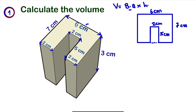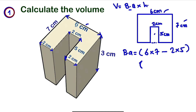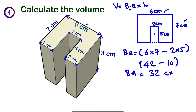The formula for the rectangle is length times width. So the base area will be equal to 6 times 7 minus 2 times 5. So 6 times 7 gives us 42, and we are going to have 42 minus 10. If we subtract this we get 32. So 32 centimeter square is our base area.